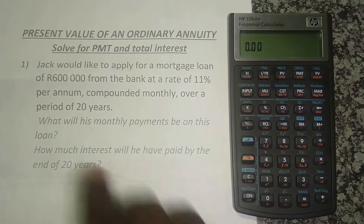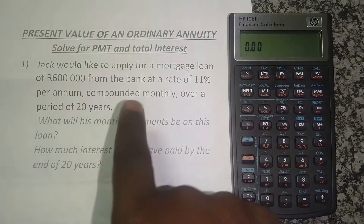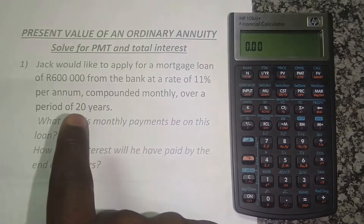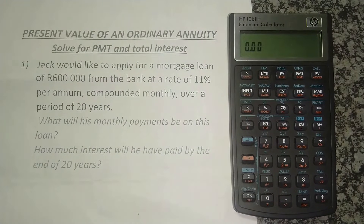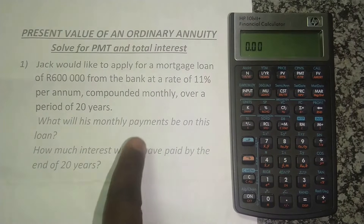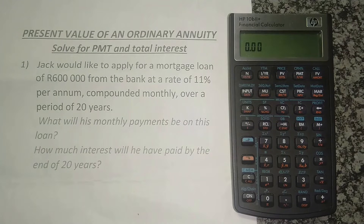Jack would like to apply for a mortgage loan of 600,000 from the bank at the rate of 11% per annum, compounded monthly, over a period of 20 years. What will his monthly payments be on this loan? The second question is: how much interest will he have paid by the end of 20 years?